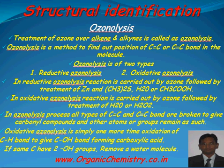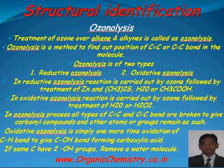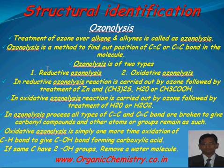In case of alkynes, reductive ozonolysis gives dicarbonyl compounds, but oxidative ozonolysis gives carboxylic acids. If the same carbon in an alkyne has a hydrogen along with an R group, reductive ozonolysis gives an aldehyde, but oxidative ozonolysis further oxidizes the aldehyde to give a carboxylic acid. On the basis of these four steps, one can identify the structure of any unknown compound.